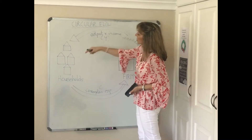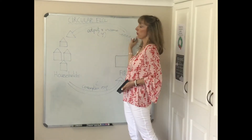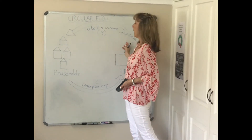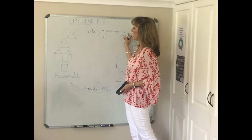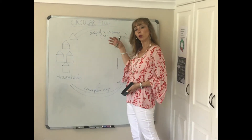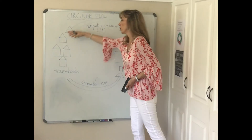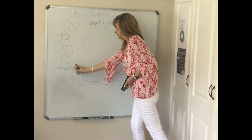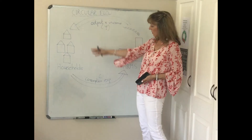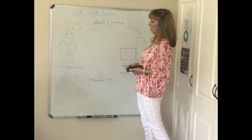As a result, households earn an income in that process, so that output generates an equivalent amount of income. Households, for instance, for their labour, will earn wages and salaries. So that income flows back to households, which can then use it for consumption expenditure purposes, and so your circular flow continues.